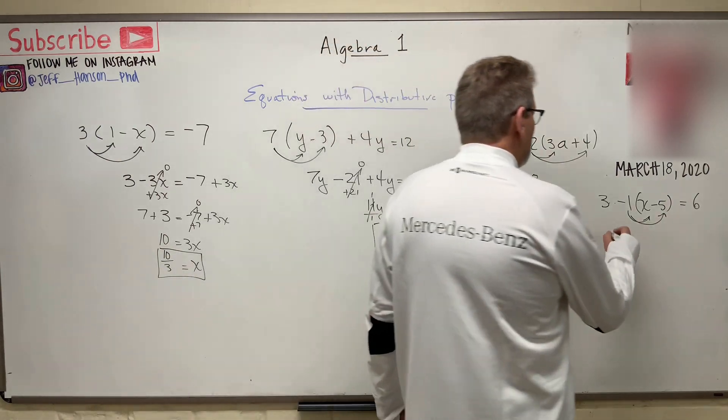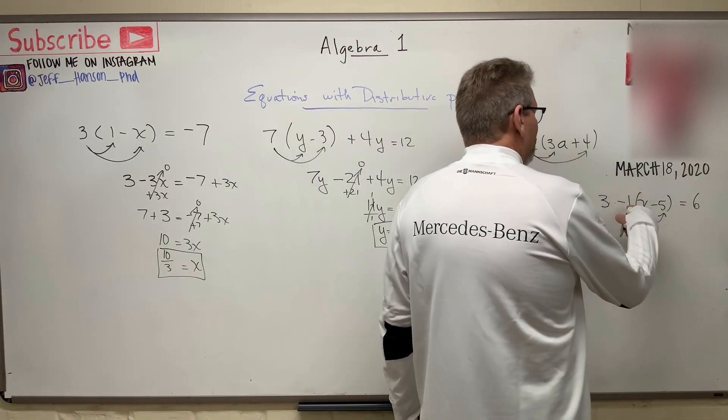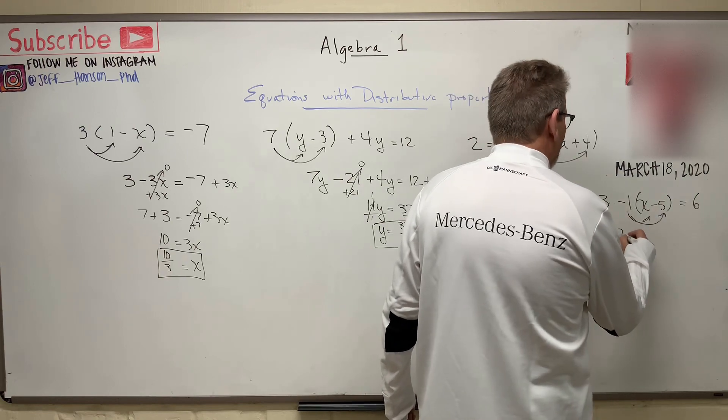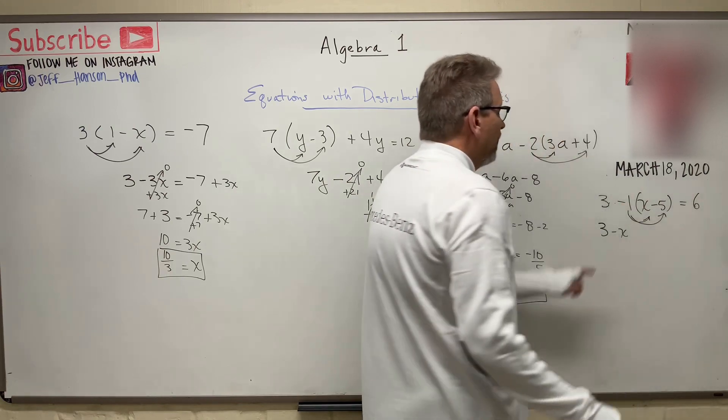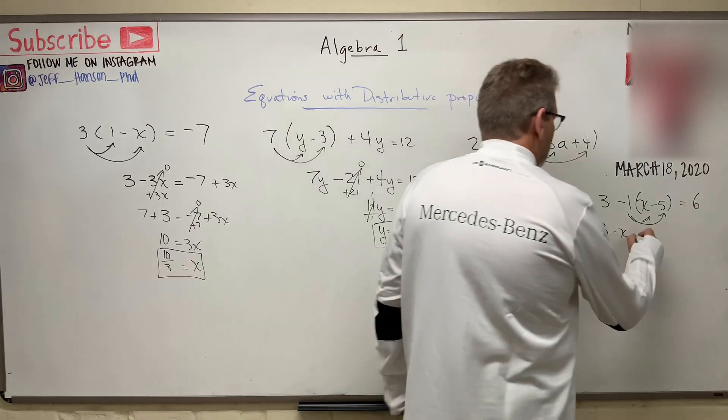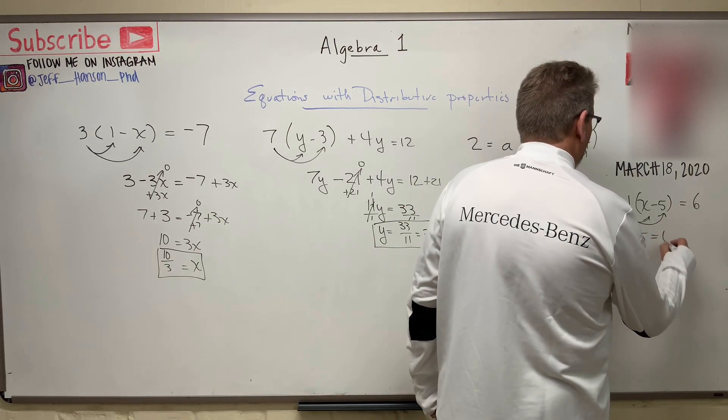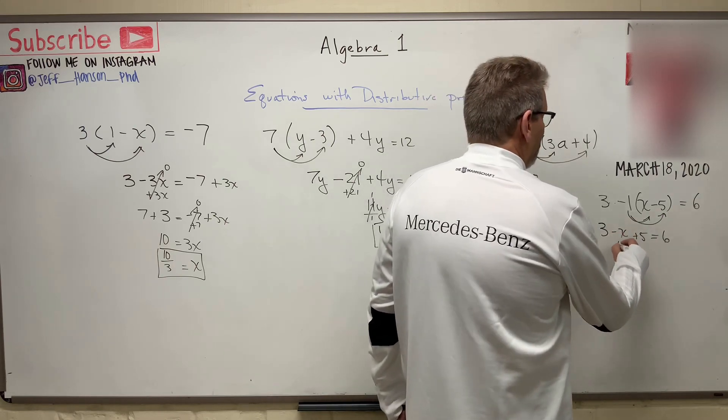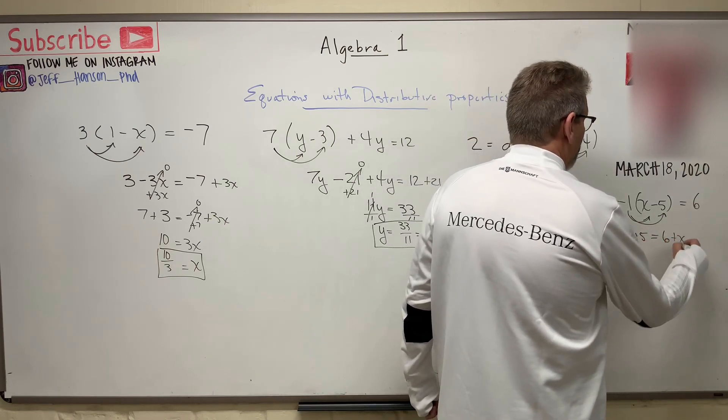And think about distributing that negative 1, and it'll work the exact same way. So this becomes 3, and then that's going to become minus x. And then this guy is going to come negative times a negative gives you a positive. So plus 5 equals 6. So again, let's move the x over to the other side. That goes to 0.